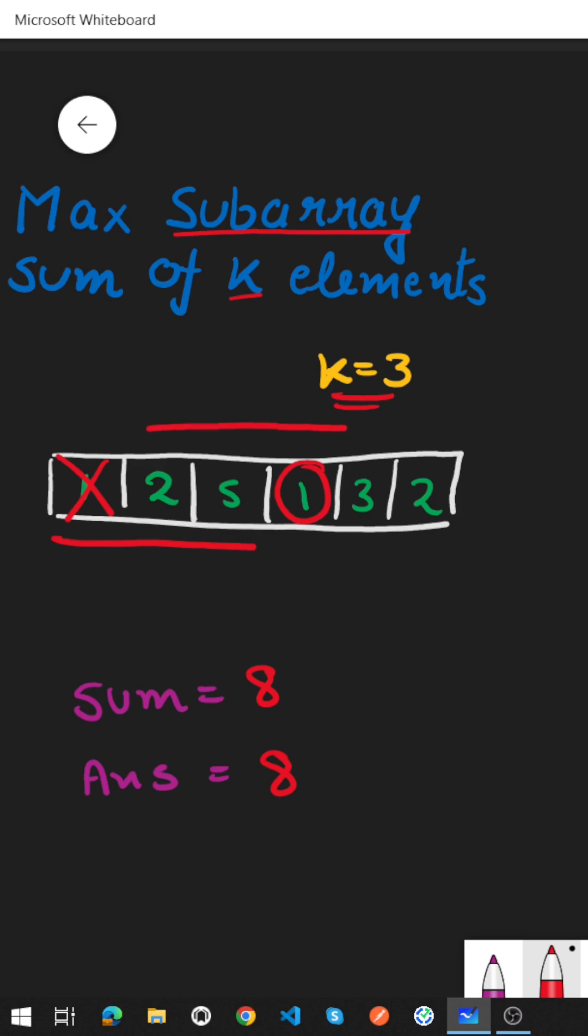We will again compute the sum. So sum of 2, 5 and 1 is nothing but 8. So we will update our sum by 8 and since our answer and sum is equal so we don't need to update our maximum answer since both are equal.